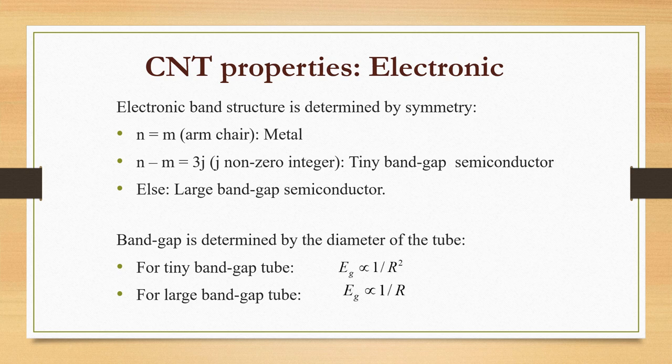For a tiny bandgap tube, Eg is proportional to 1 by R squared, and for large bandgap tubes, Eg is proportional to 1 by R, where R is the radius of the tube.